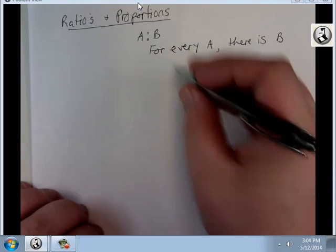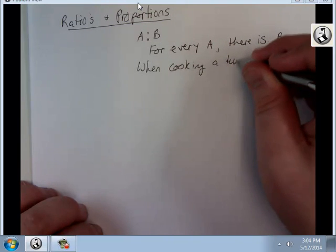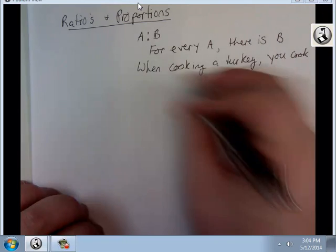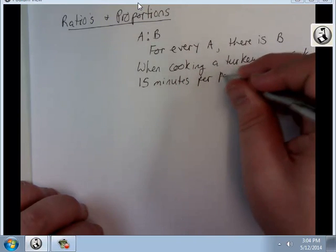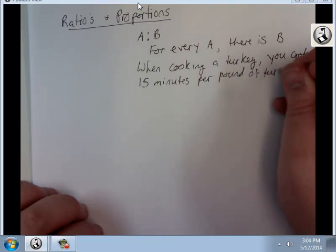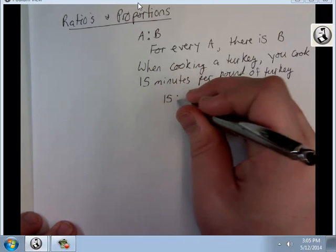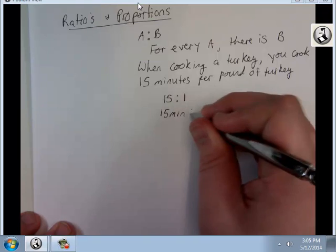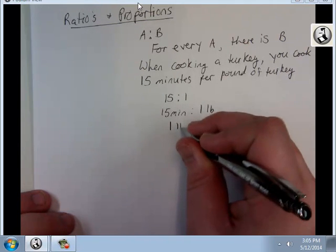What does that mean? Well, let's say when cooking a turkey, you cook 15 minutes per pound of turkey. We would write this relationship as 15 to 1. And if we want to be technical and use variables, we'd have 15 minutes to every one pound. The beauty about proportions and ratios is I can flip them and I keep the same relationship. I could also write one pound for every 15 minutes.